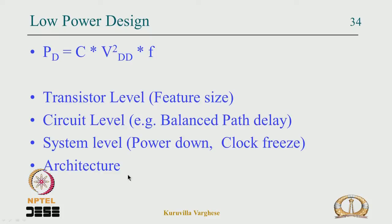At the algorithmic level, you can choose an algorithm that reduces power dissipation. For example, with multiplication there are different algorithms available; some may be slower but reduce power dissipation. So low-power design can be attacked at all fronts: transistor level, circuit level, system level, architecture level, and algorithmic level.